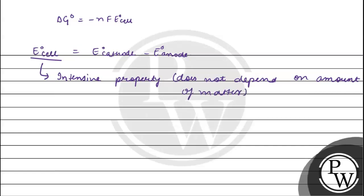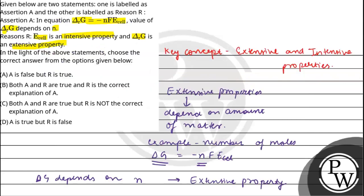So this is the correct explanation of assertion. The final answer for this question will be option B: Both A and R are true, and R is the correct explanation of A. Hope you found your answer and understand it well. Best of luck.